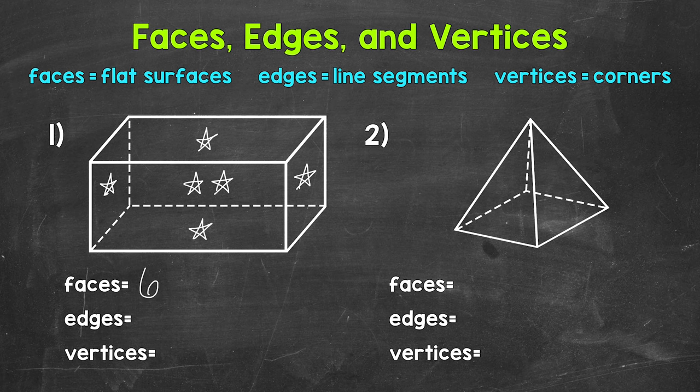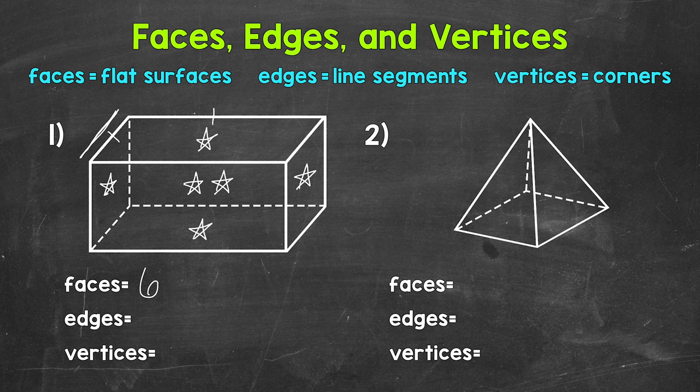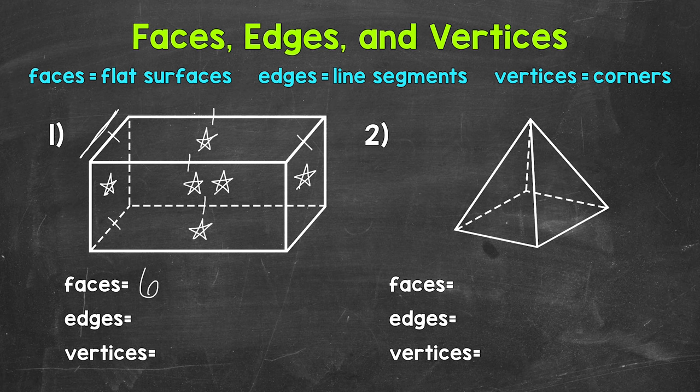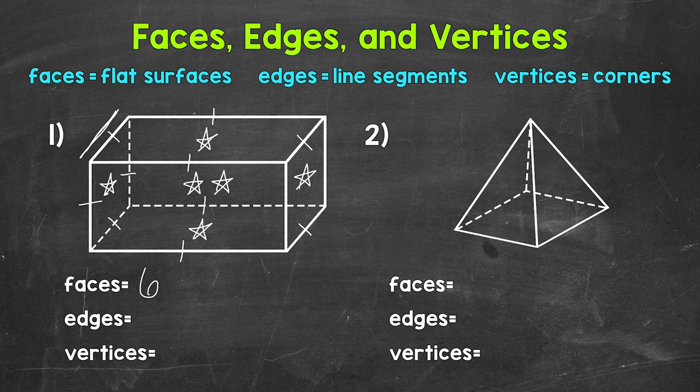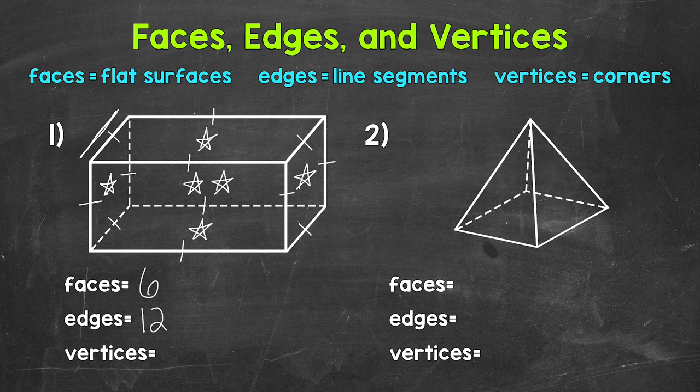Now let's identify and count the number of edges. Those are the line segments created by two faces meeting. For example, this is an edge right here. So let's start here with one edge and go around the top. So 1 edge, 2 edges, 3 edges, 4 edges. Now let's go around the bottom. 5 edges, 6 edges, 7 edges, 8 edges. Now for the sides, 9 edges, 10 edges, 11 edges, 12 edges. So 12 total edges.